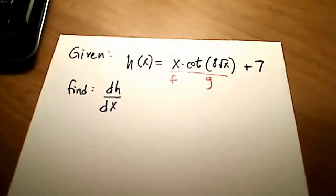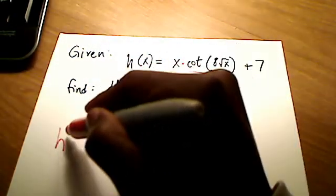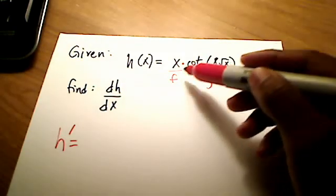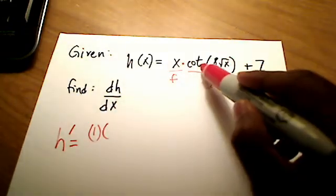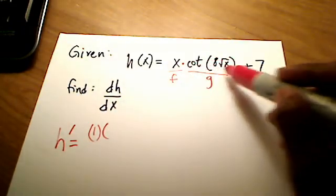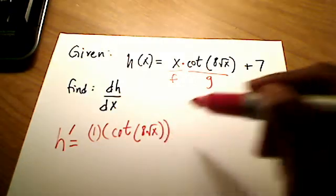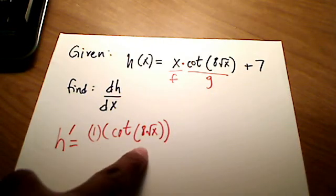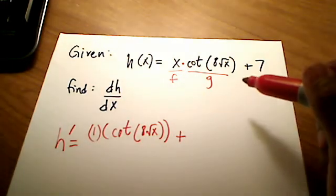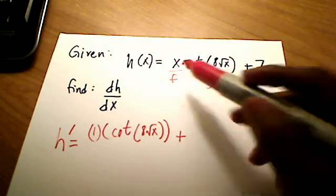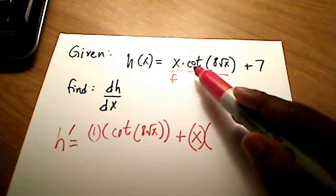So product rule says, first, give me the derivative of f. So the derivative of the x is simply just a 1, times the derivative of g, or times, rather, times just g as it is. I'm not even taking the derivative of it yet, so I'm just going to leave it like so. Well, that's not going to change any, because 1 times cotangent of stuff is just cotangent of stuff. Plus, here's the rest of the product rule, plus my f, which in this case is x, times the g prime, times the derivative of all this.